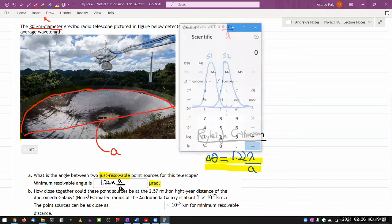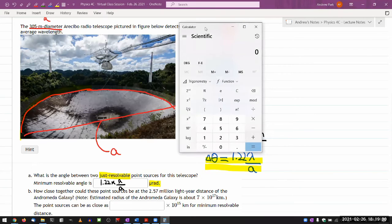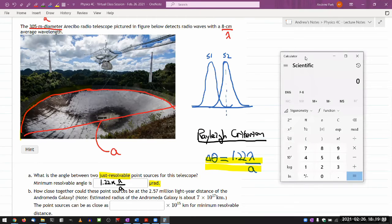I don't normally do it, but this is one of those circumstances where the number is more meaningful than just seeing the formula. 1.22 times, and let me do it this way. I'm going to make sure I plug in wavelength and aperture in the same units. That will make sure the unit of meters cancels out. And my answer will be in the unit of radians, and I just have to convert it to microradians. So 1.22 times, let me plug in wavelength in meters. That's 0.08 meter divided by 305 meters for the diameter.